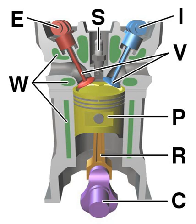There are a number of variations of these cycles, most notably the Atkinson and Miller cycles. The diesel cycle is somewhat different.